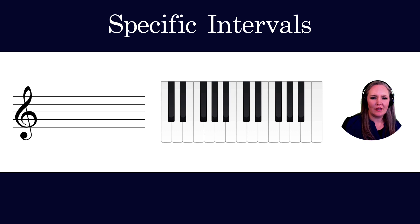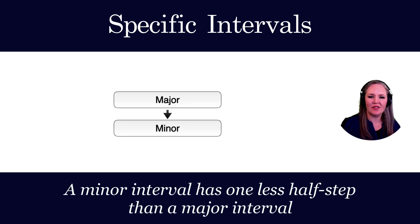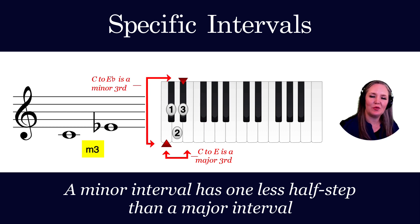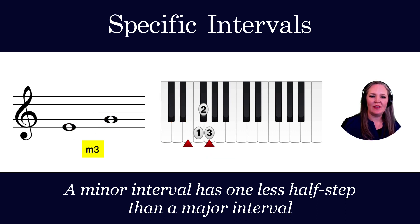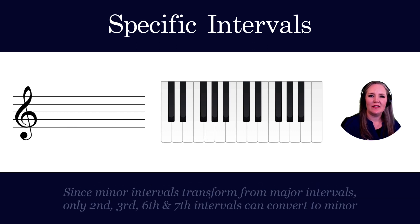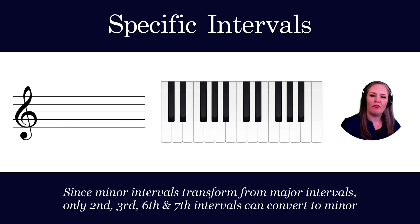Minor intervals have one less half step than a major interval. For example, since C to E is a major third — four half steps — C to E-flat is a minor third because it has three half steps. E to G is also a minor third, since E to G-sharp is a major third. Since minor intervals transform from major intervals, only seconds, thirds, sixths, and sevenths can be minor.